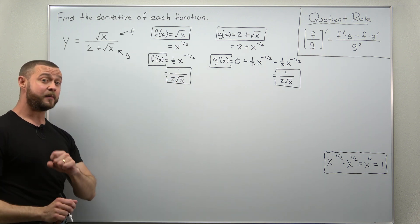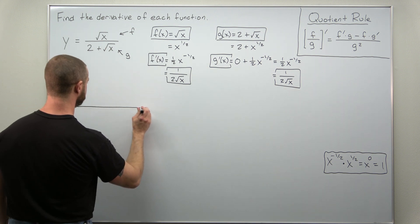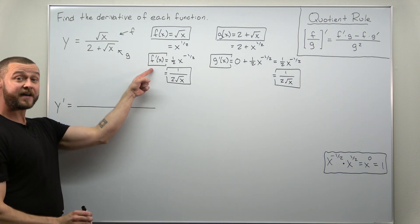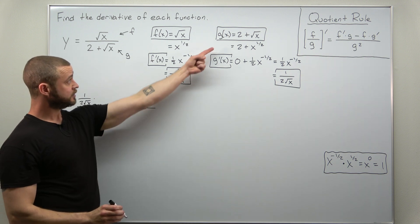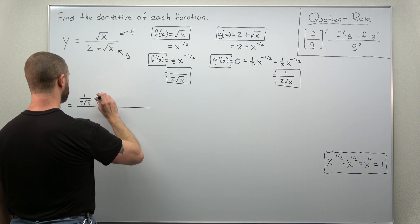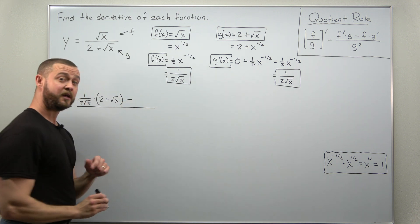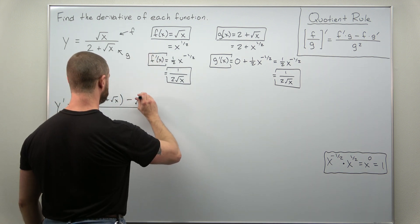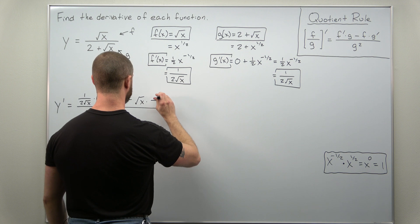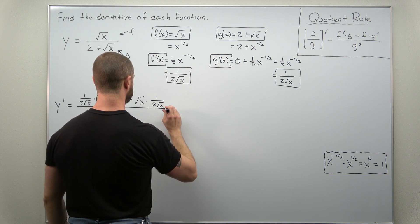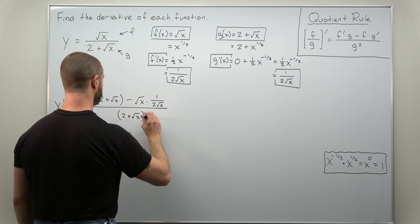Let's take these pieces and combine them with the quotient rule to calculate y prime. The first term is f prime, which is 1 over 2 times square root of x, multiplying g — be careful to use parentheses — so write that as (2 plus square root of x). In the quotient rule we get a minus sign, and the next part is f, which is square root of x, times g prime, which is 1 over 2 square root of x. Then in your denominator you have g squared: (2 plus square root of x) squared.